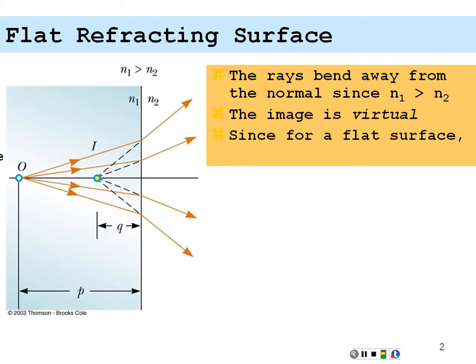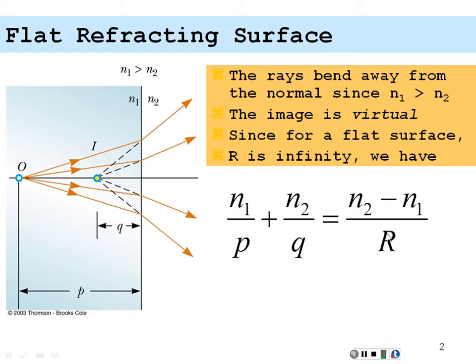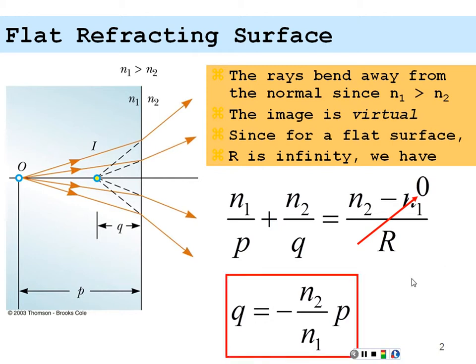Since for a flat surface we have a radius of curvature that is infinitely large, one over R will be zero. Solving for image distance Q, we get Q equals negative N2 over N1 times the object distance P. Since N2 is smaller than N1, the magnitude of our image distance is less than our object distance, and it's on the same side as the object. So the image appears closer to the interface than the actual object is.